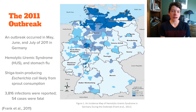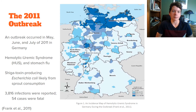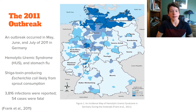During May, June, and July of 2011 in Germany, an epidemic of gastroenteritis and hemolytic uremic syndrome occurred. The cause of this outbreak is believed to be the result of the consumption of sprouts and the inadvertent ingestion of fecal matter, which is believed to be the vehicle for shiga toxin-producing Escherichia coli. Ingestion of this bacteria can result in hemolytic anemia, anemia caused by the destruction of red blood cells, acute kidney failure, and a low platelet count.